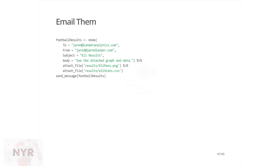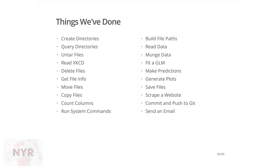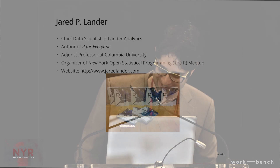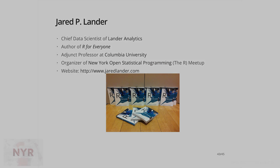Now let's email the results. Use the gmailr package — build a MIME object, specify who it's going to, who it's from, the subject, the body, attach files, and send the message. All from within R, without ever opening up the email interface. There are similar packages for Facebook and LinkedIn. So we've created directories, downloaded files, untarred, inspected, renamed, copied, modeled, visualized, scraped the web, saved files, committed to git, and sent email — all inside R without ever having to leave, without ever using the mouse.